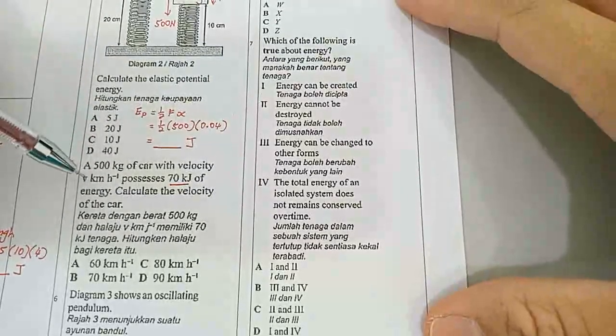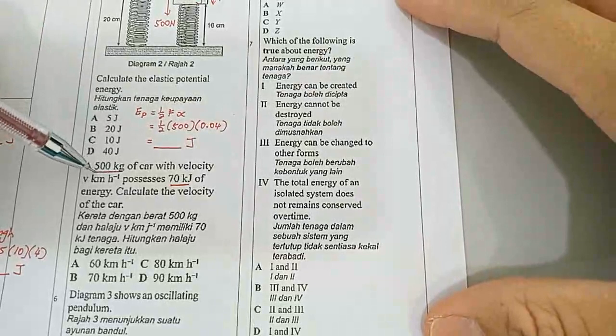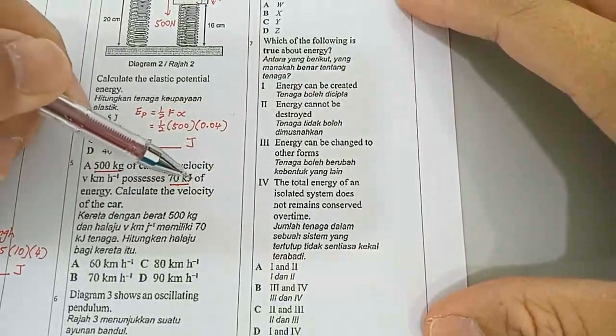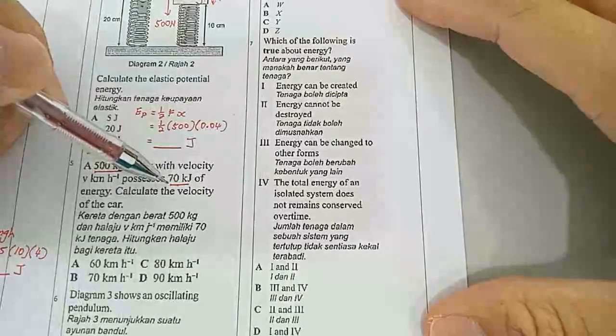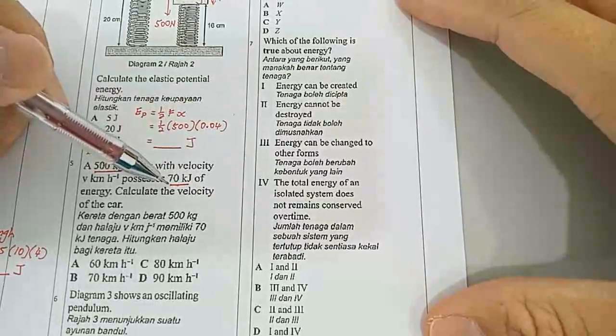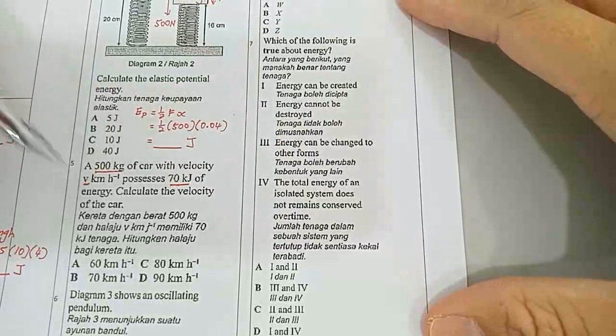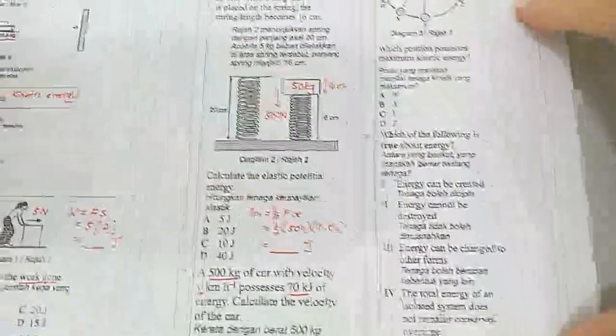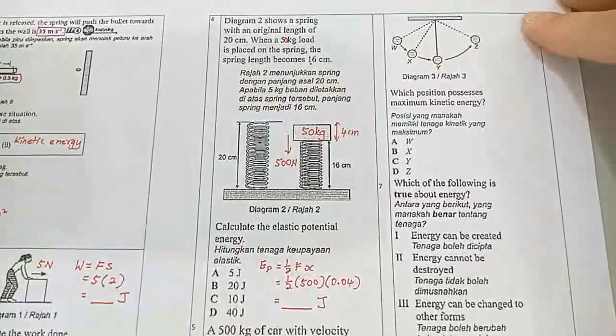So we have the mass, we have the energy, which in this case is kinetic energy. So we have to calculate the velocity of the car.